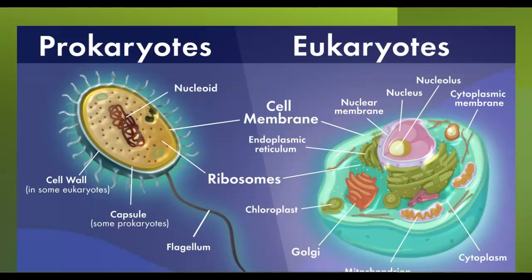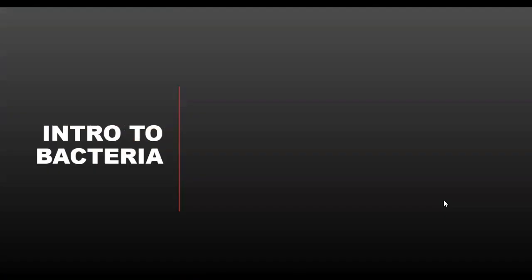Here are two illustrations of prokaryotes versus eukaryotes. Here you have a prokaryote and here's a eukaryote. As you can see, a eukaryote is going to be more complex — there's just a lot more going on in the cell.